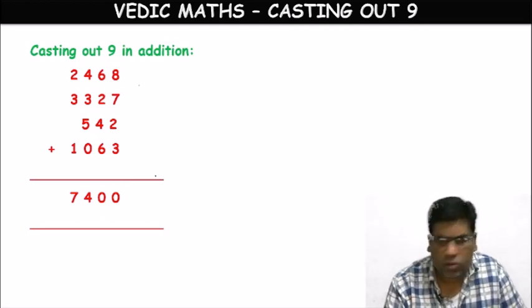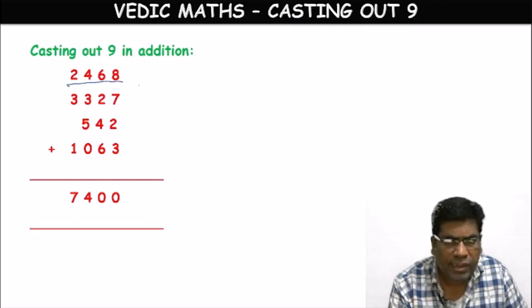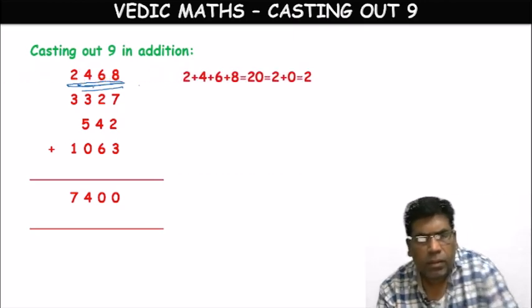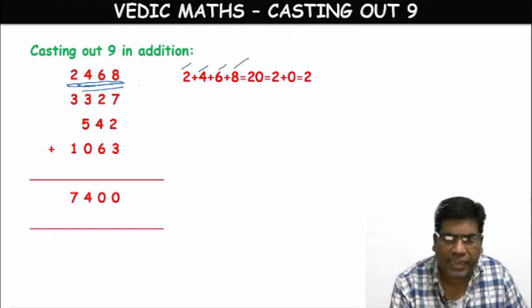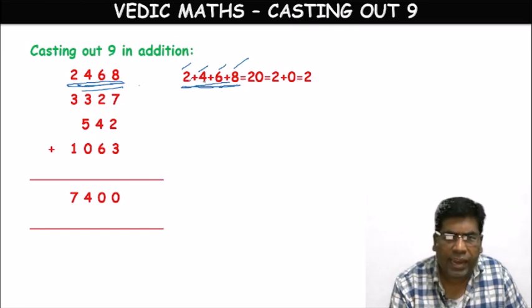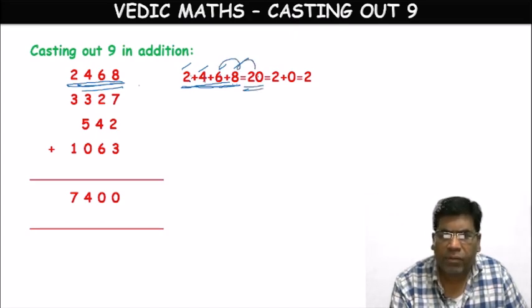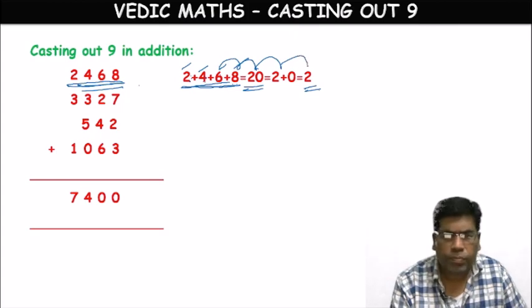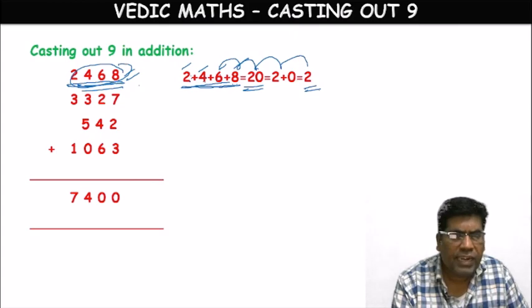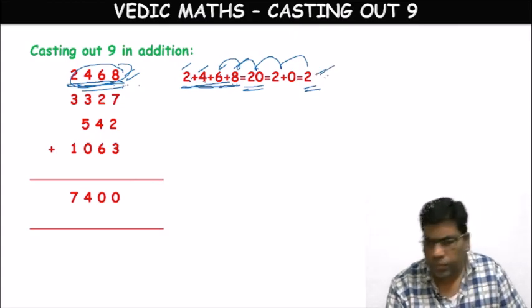So for the first number 2468, add all single digits: 2 plus 4 plus 6 plus 8. There's no combination of 9 possible. 2+4=6, 6+6=12, 12+8=20. Write 20, then 2+0=2. The first number condensed to a single digit is 2.